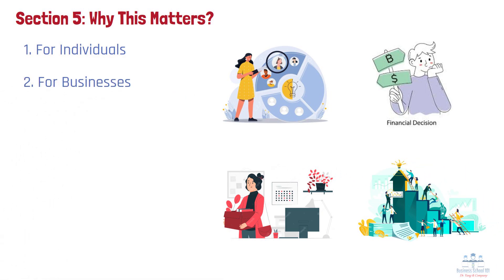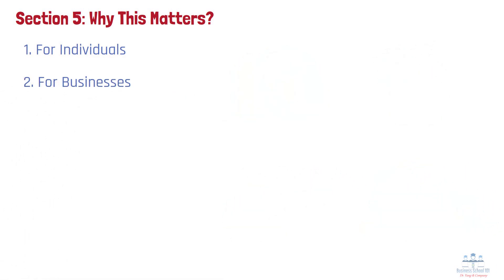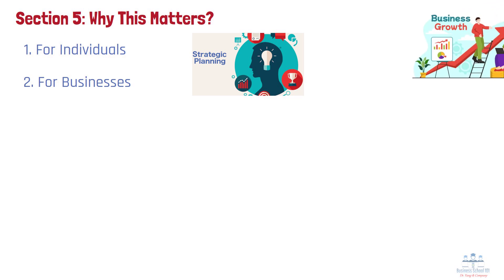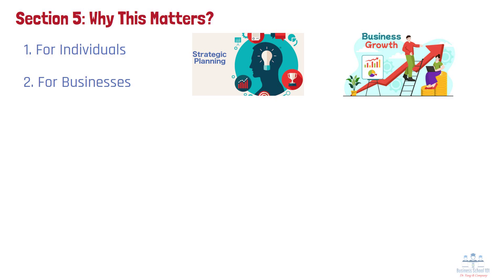Number 2: For Businesses. For businesses, staying informed about business cycles can guide strategic planning. During expansions, companies might focus on growth, investing in new projects or hiring more workers. But as signs of a downturn emerge, it's wise to tighten budgets, manage debt carefully, and build financial resilience to weather slower periods.